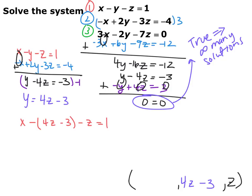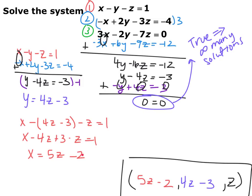Now I need to do the same for x. I'll plug z and 4z minus 3 in for y and z into equation one: x minus y minus z equals 1. Every time I see y, I replace it with 4z minus 3, and every time I see z I leave it as z. Solving for x gives x equals 5z minus 2. So there's a pattern: whatever z is, y is 4 times that minus 3, and x is 5 times that minus 2. You could have picked any variable to be the free variable. Whenever you have infinitely many solutions, your coordinate answer is written in terms of that variable: (5z minus 2, 4z minus 3, z).